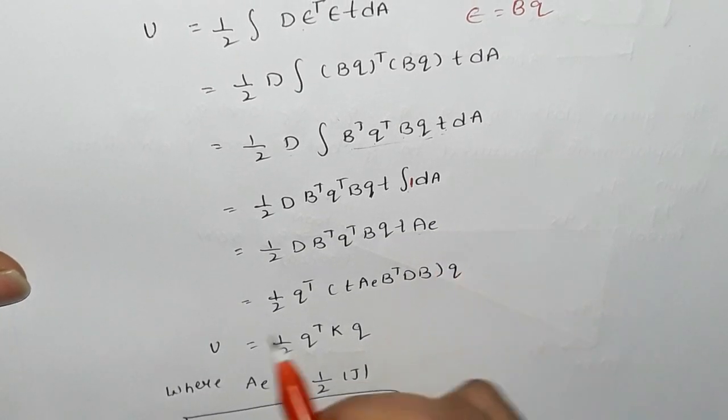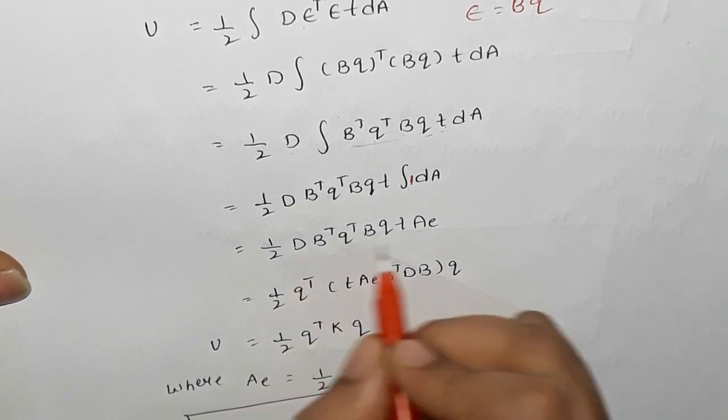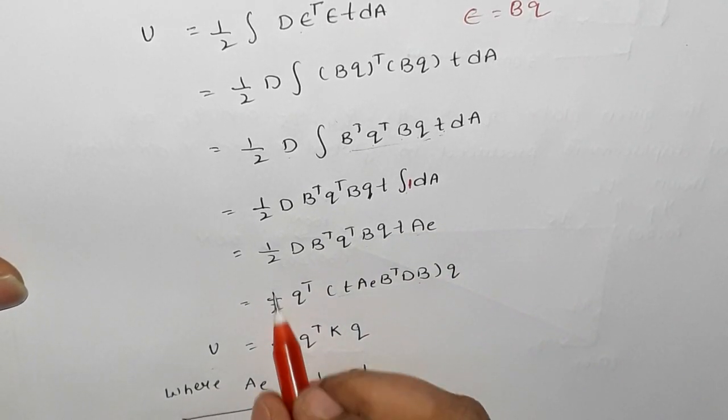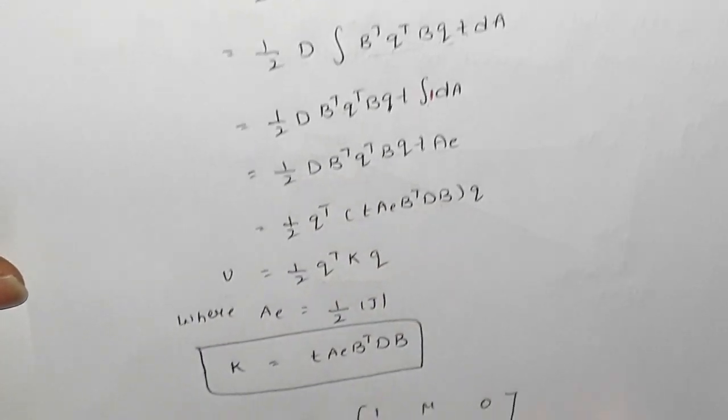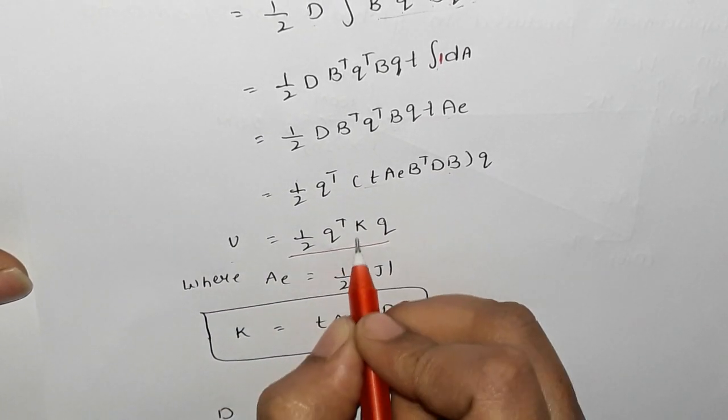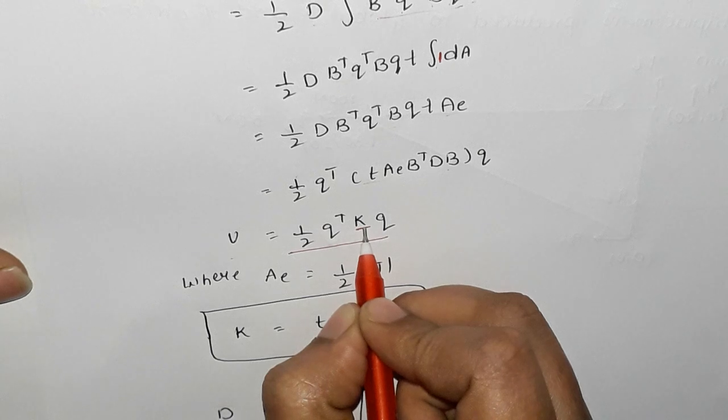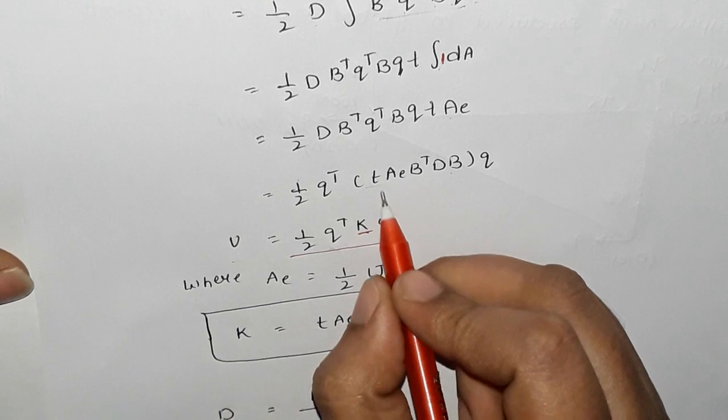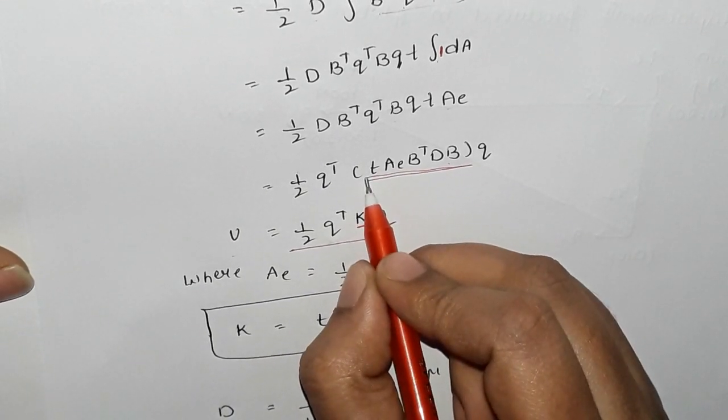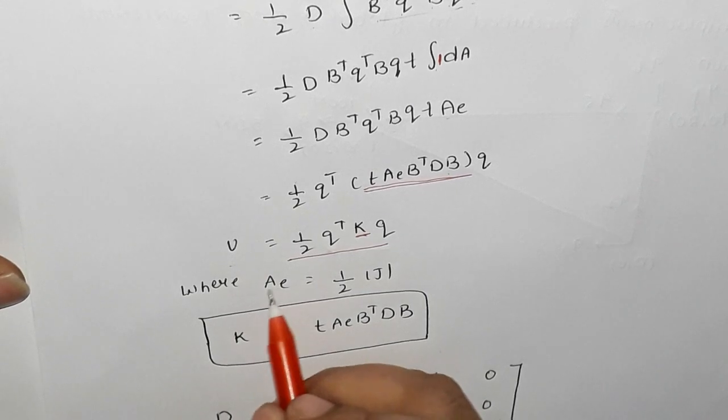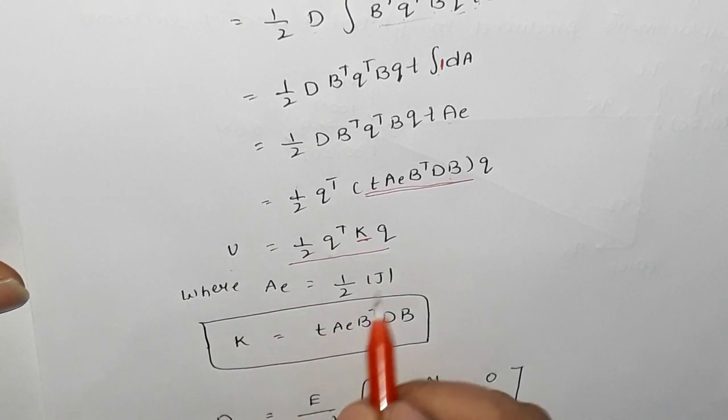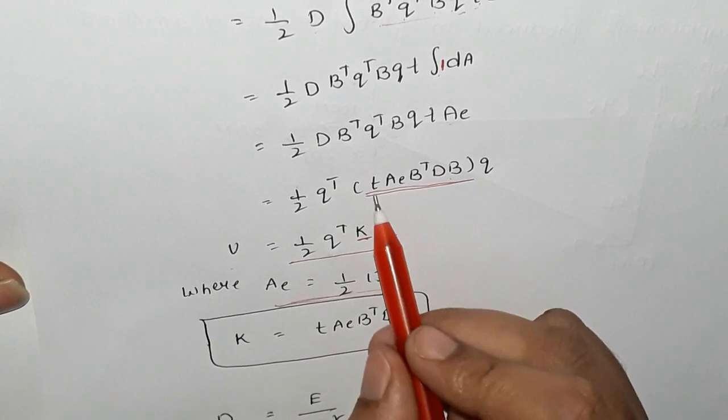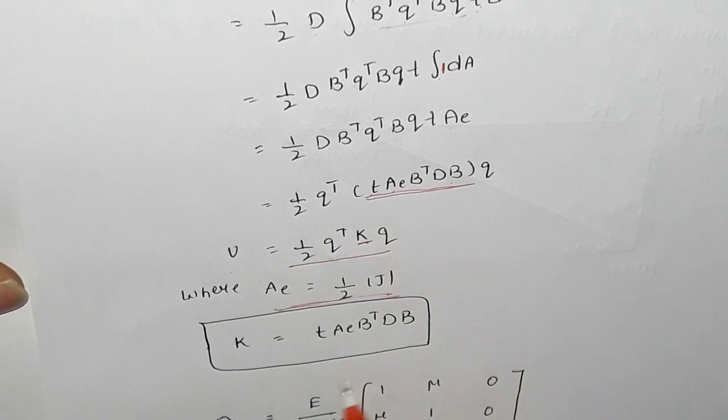Here we have AE. For example, AE value, it is called half det J relationship already derivation part. So k is T AE B transpose DB.